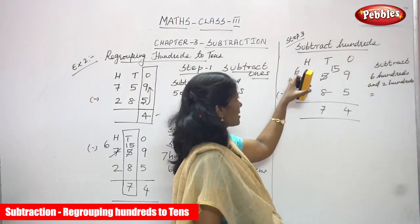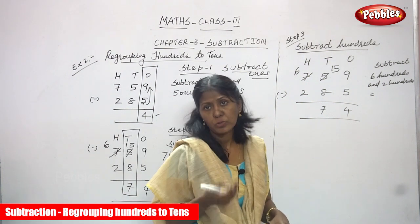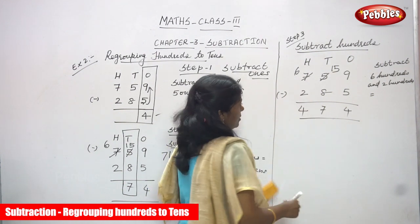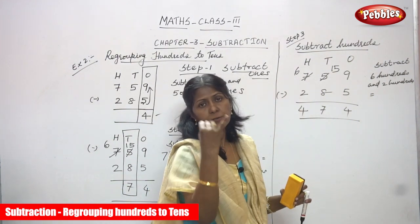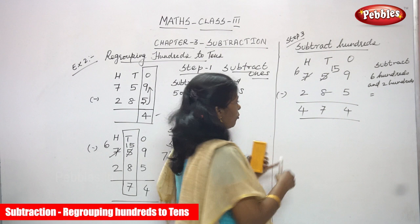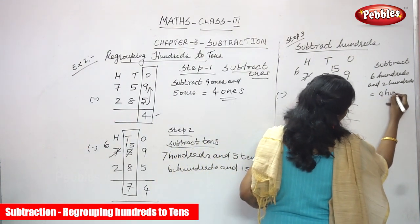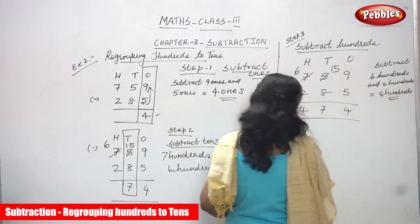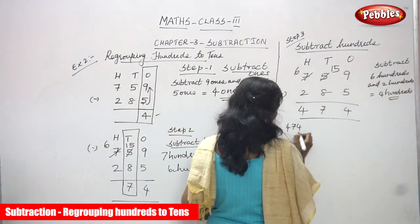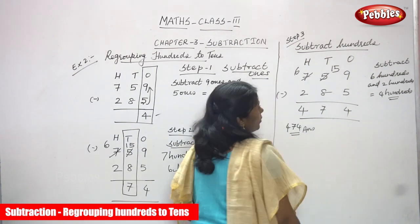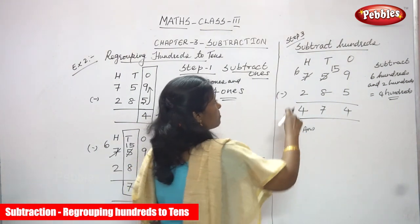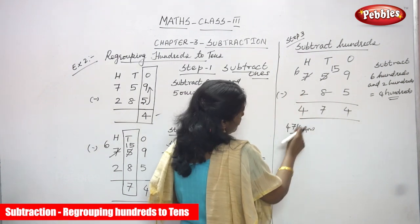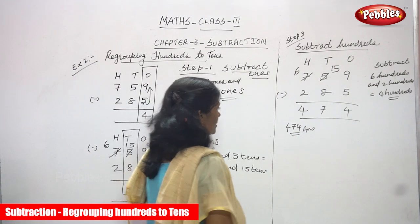Six minus two: after two, count three, four, five, six — so the answer is four. That is four hundreds. So the answer is 474. From 759 you subtract 285 and you get 474. This is the correct answer.